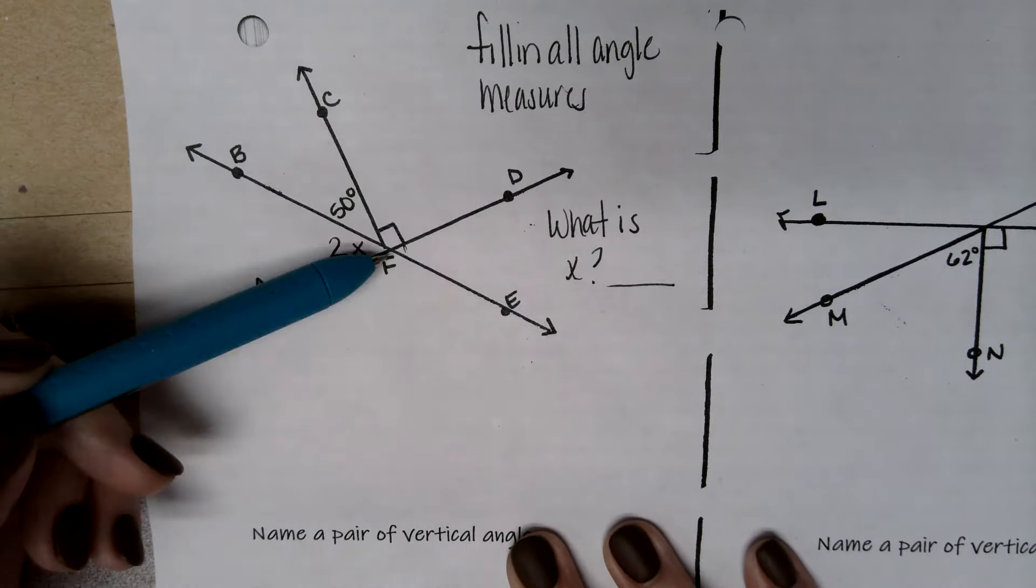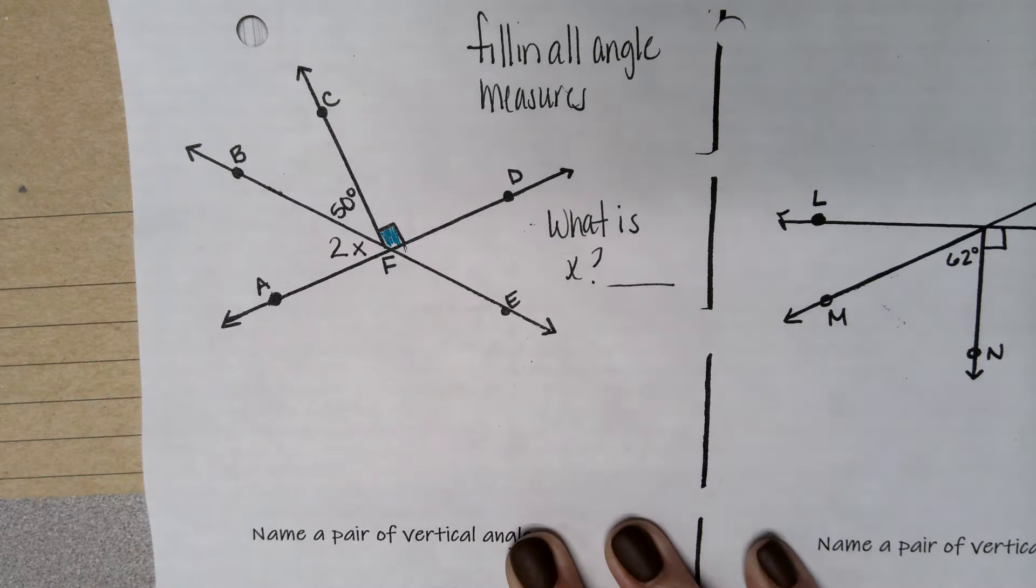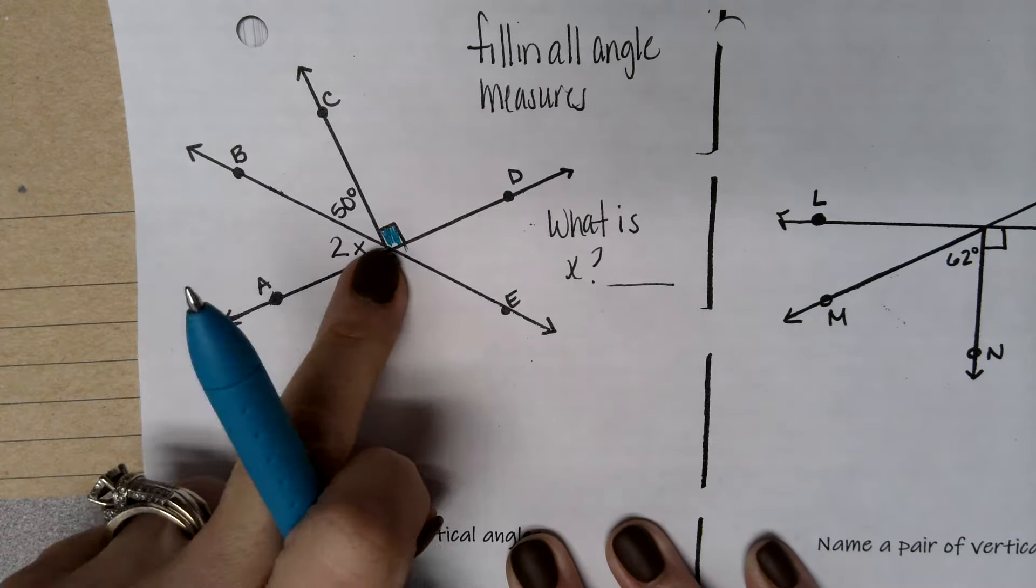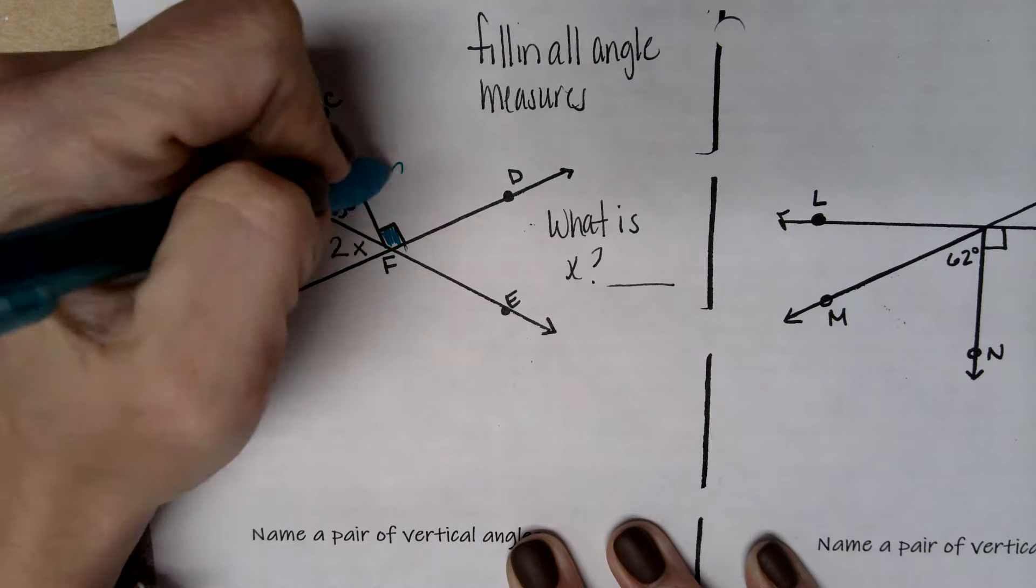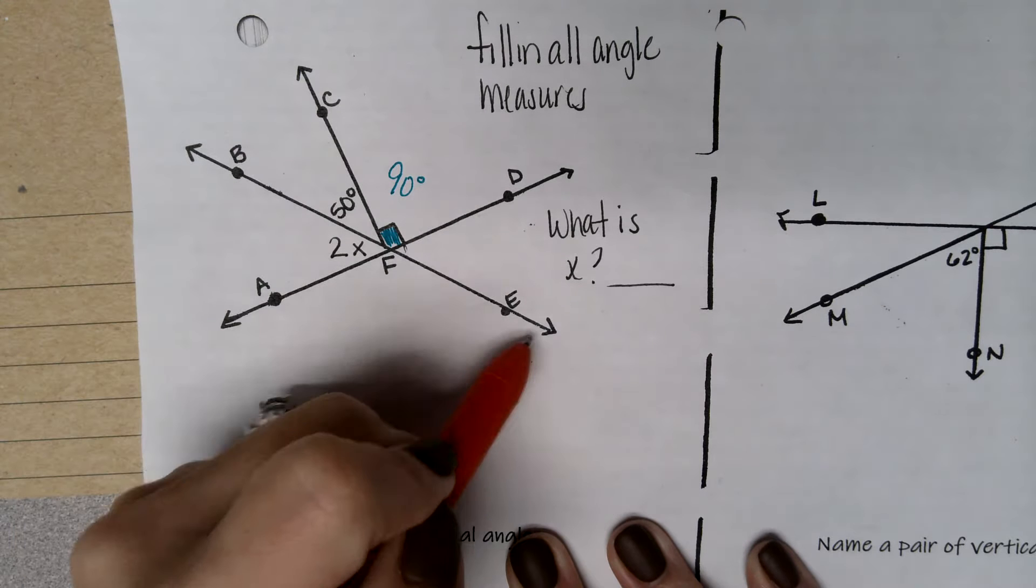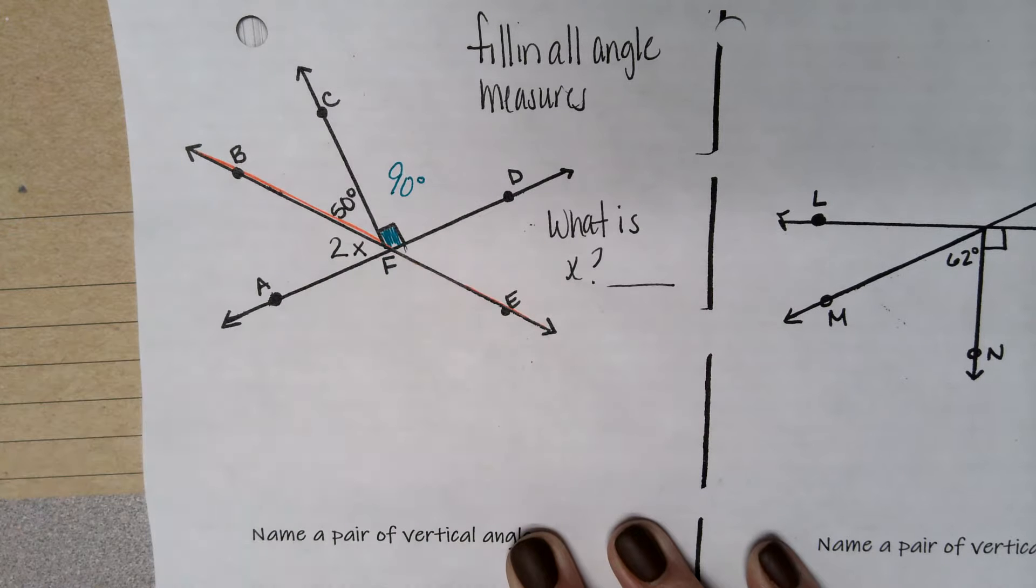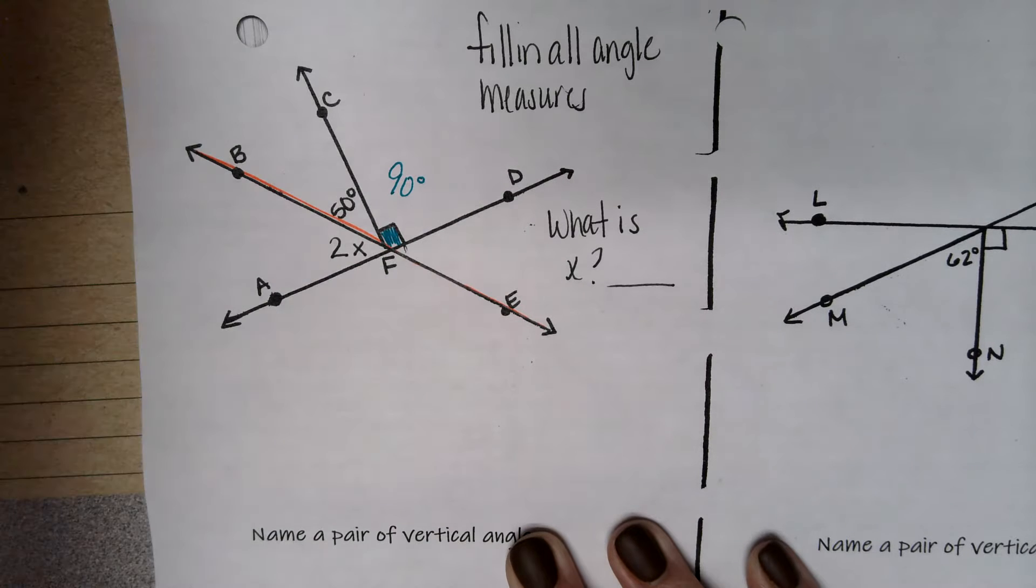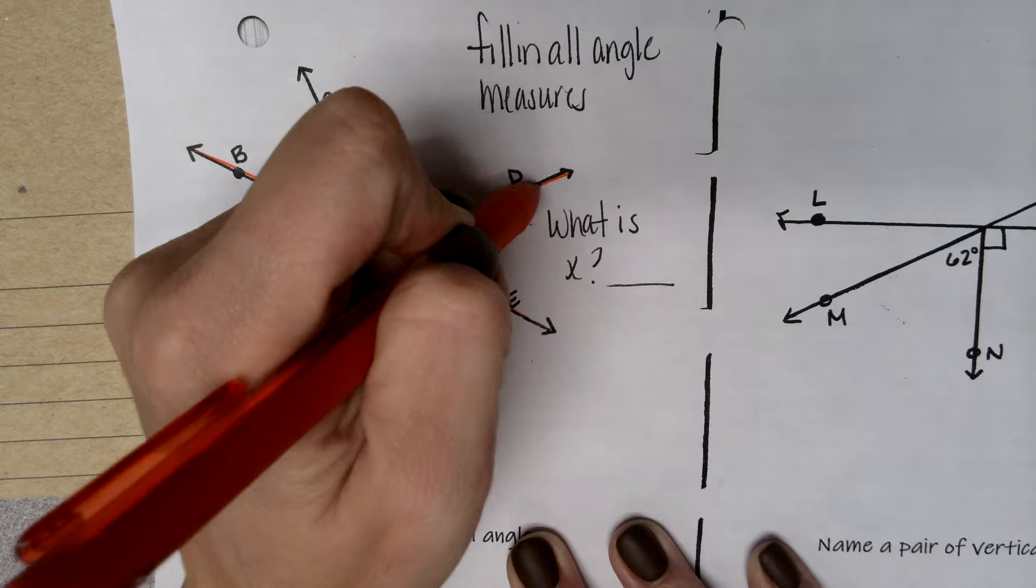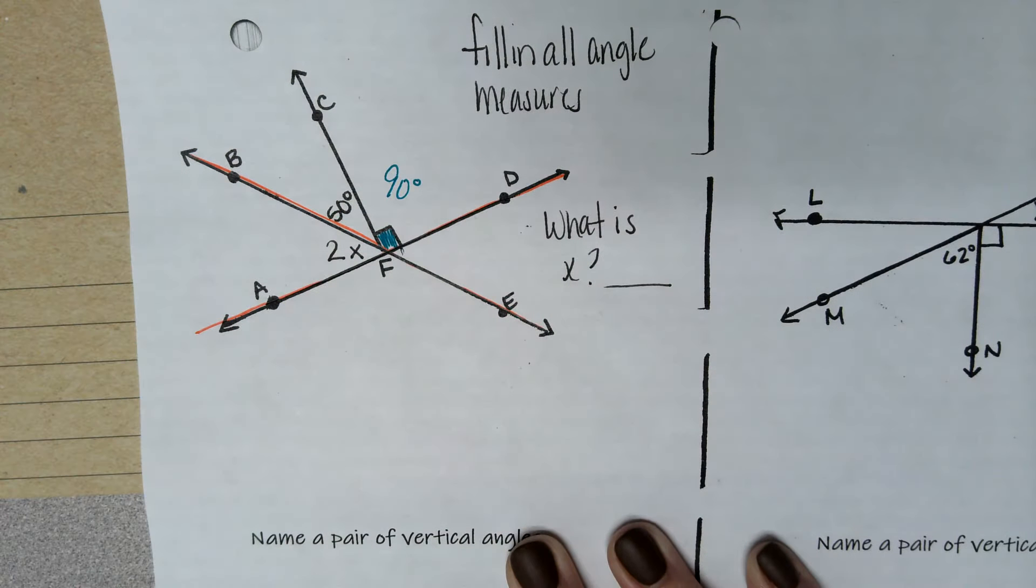And you can look and see and say, I see this box right here for this angle. This box always means 90 degrees. If I look, I have these straight lines. I have this straight line here that's 180 degrees because we know that a straight line is always 180 degrees. And I have this line that is 180 degrees.